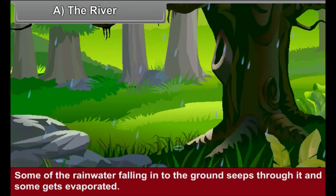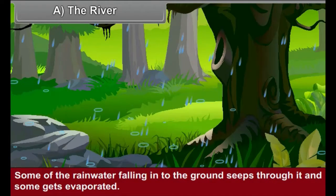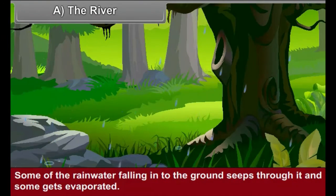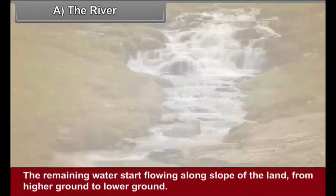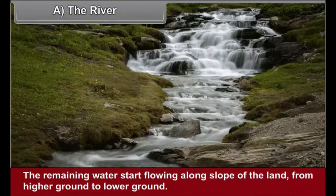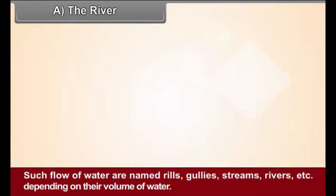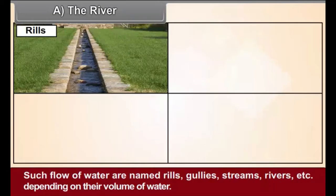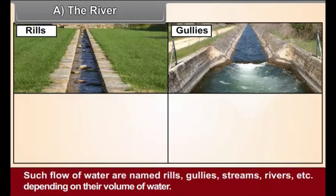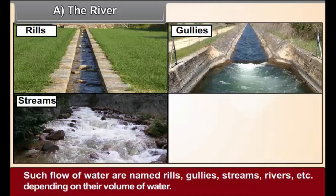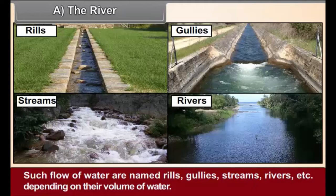The River. Some of the rain water falling onto the ground seeps through it and some gets evaporated. The remaining water starts flowing along the slope of the land. From higher ground to lower ground, such flows of water are named rills, gullies, streams, rivers, etc., depending on their volume of water.